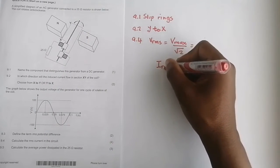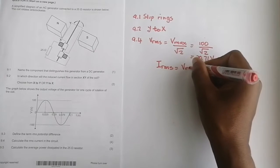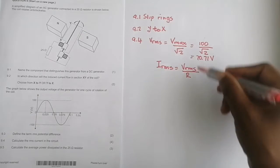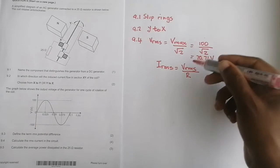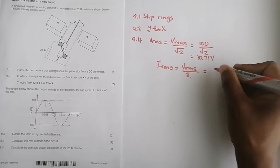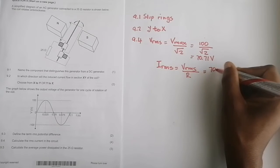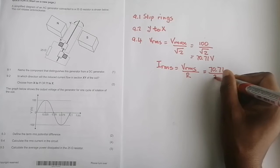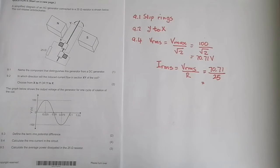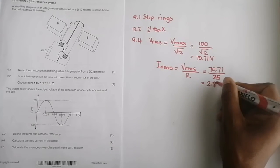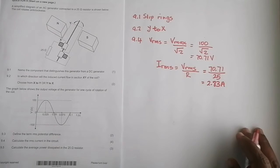Now I can find I_RMS, which is V_RMS divided by the resistance. This is Ohm's law, I equals V over R. I've got that value 70.71, divided by the resistance which is 25. I'm going to divide by 25 and I get a value of 2 root 2, or 2.83 amps. That is our I_RMS value.